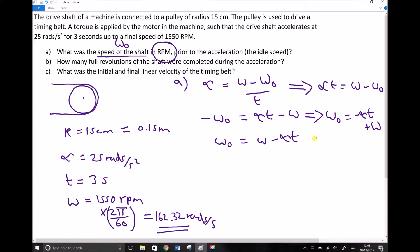So now I can input my numbers. I must use omega in rads per second, so 162.32. And then I need to subtract alpha t. Well, alpha is given in the question as 25 and t is 3 seconds. So minus 25 times 3.